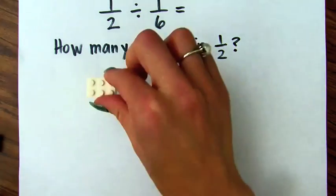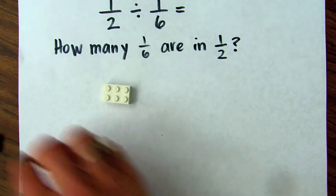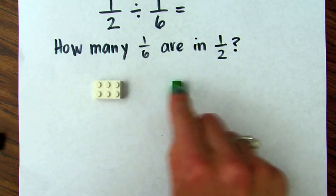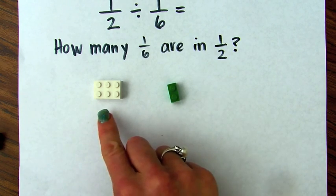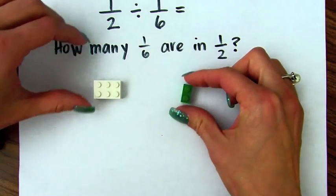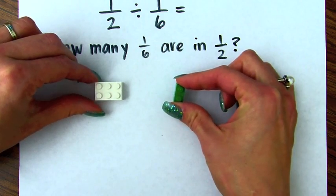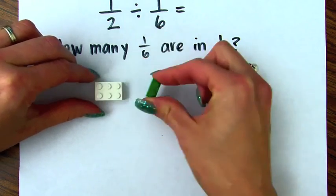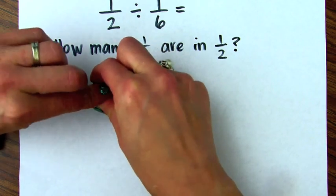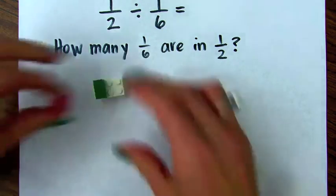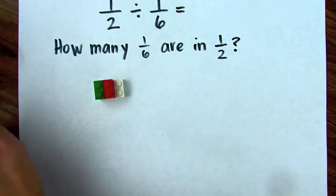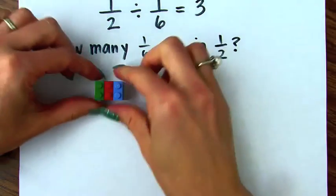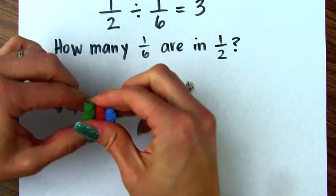I'm going to take my half fraction and the one-sixth. This is one-half divided by one-sixth — we just want to know how many one-sixths are in one-half. How many of these would fit in there? Kids use Legos all the time and they want to see how many of these it would take to cover this up. Well, there's one, two, three. So it takes three. The answer is three — how many one-sixths are in one-half? Three.